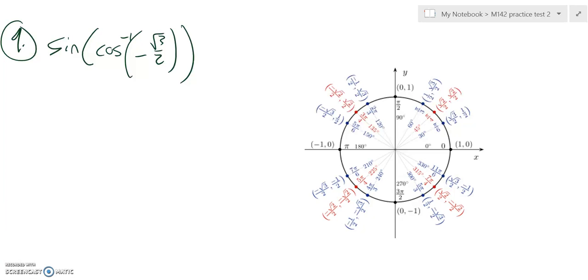This is Math 142, question number 9, for practice test 2, and we are going to find the sine of the inverse cosine of negative root 3 over 2.